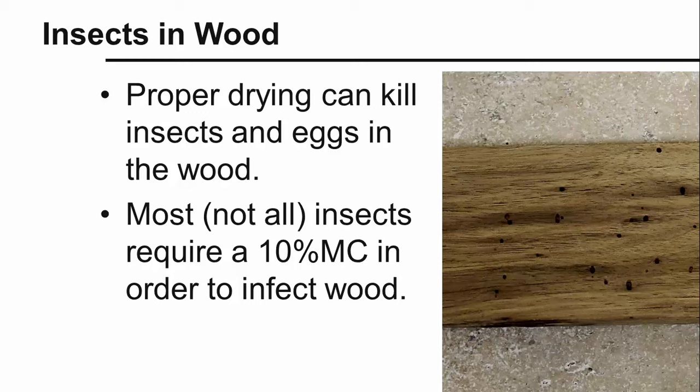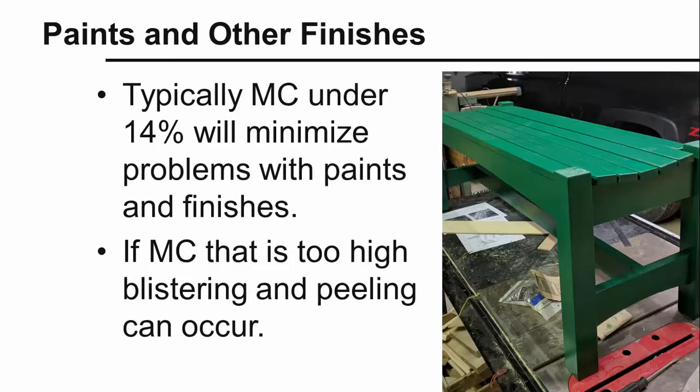Properly drying wood also kills any insects and eggs that may be present. Most insects require a moisture content above ten percent in order to survive in the wood. The exception is some termites and some powder post beetles. As long as the temperature of the wood exceeds 135 degrees during the drying process, any insects and eggs in the wood will be killed. Air drying will not kill insects or eggs because temperatures are not high enough. Problems with paints and finishes can also occur at high moisture contents — moisture content lower than 14 percent should minimize blistering and peeling.